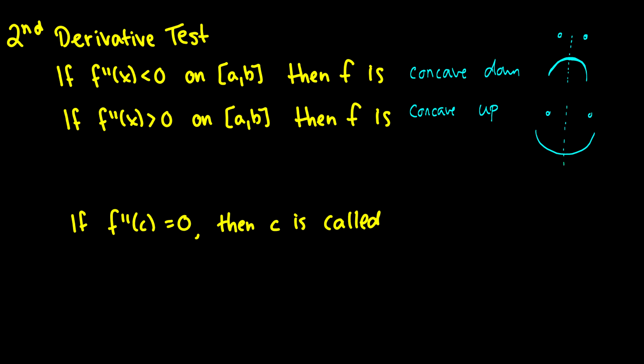If you remember, concave up is happy and concave down is sad — you're either happy or you're sad, you're up or you're down. We also have this definition: if f double prime of c is equal to zero, then c is called an inflection point.